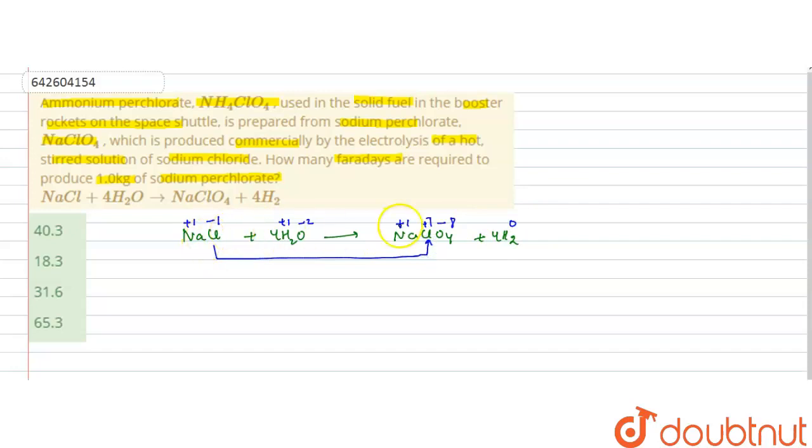That is from minus one to plus seven, that is a change of eight. It means to produce one mole of NaClO4...